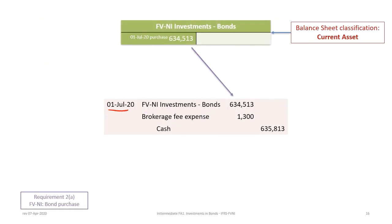The first journal entry is on July 1, 2020: debit FVNI Investments—Bonds for the present value of $634,513, and debit Brokerage Fee Expense for $1,300, since under FVNI classification brokerage fees are expensed separately. The total credit to Cash is $635,813. The FVNI Investments account is classified as a current asset under both ASPE and IFRS.